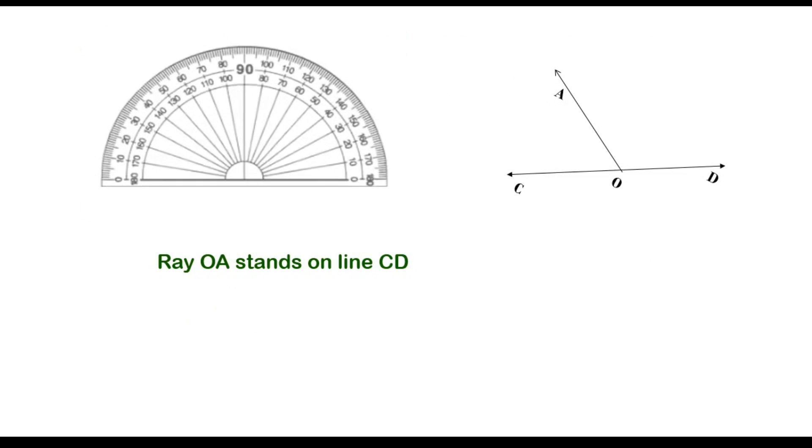Now, ray OA stands on line CD, forming two adjacent angles. Angle AOC plus angle AOD equals 180 degrees. Recall the linear pair axiom, which says if a ray stands on a line, then the sum of two adjacent angles so formed is 180 degrees.